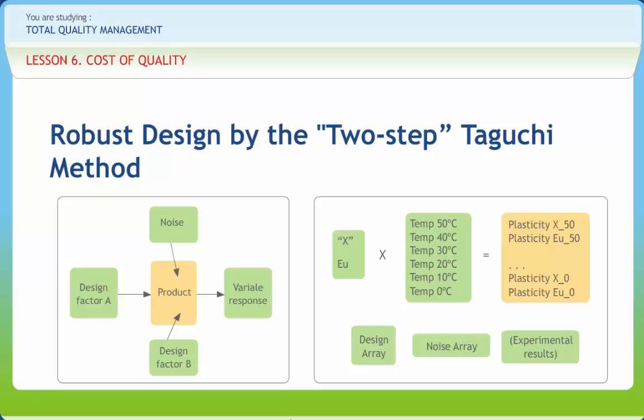In step 2, the optimum setting of some other design factor is sought to put the design's average response at the desired target. The performance of a product or process is affected by a multitude of factors.